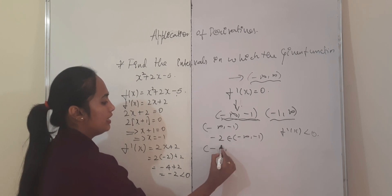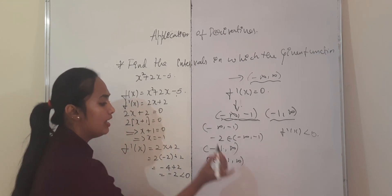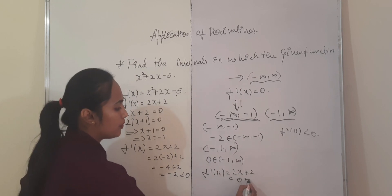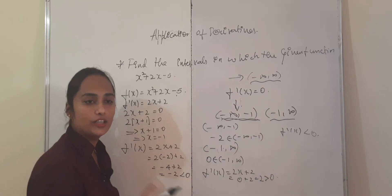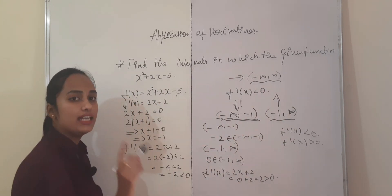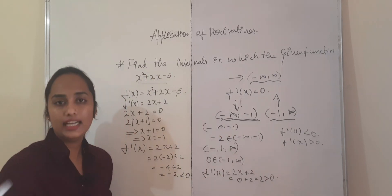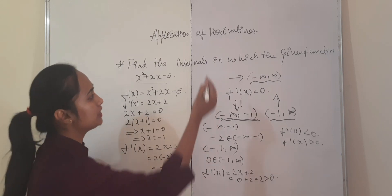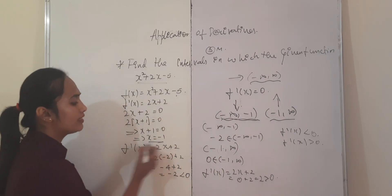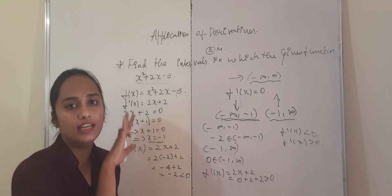For the next interval (−1, ∞), choose a point — x = 0 belongs to this interval. Substituting into f′(x) = 2x + 2: 2(0) + 2 = 2, which is greater than 0. Since f′(x) > 0, the given function is increasing on (−1, ∞). So the given function is decreasing on (−∞, −1) and increasing on (−1, ∞). This is the procedure for any 3-mark question: find f′(x), equate to 0, find critical points, split the interval, and check increasing or decreasing.